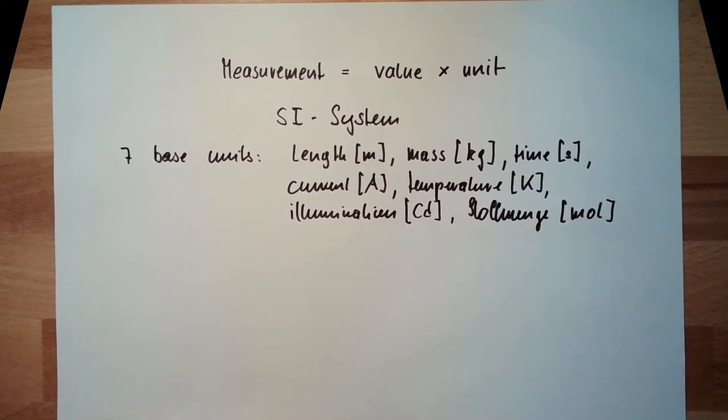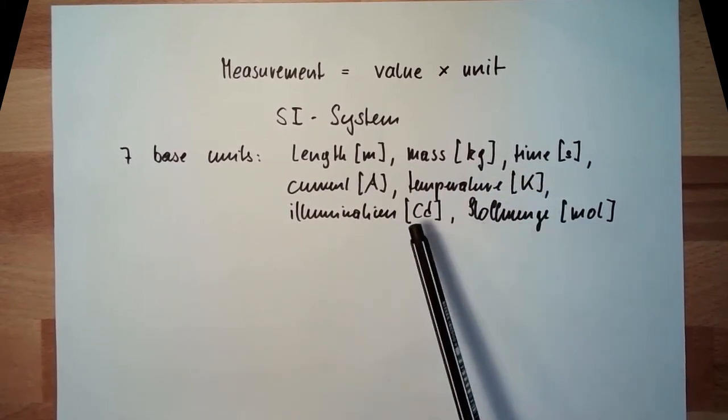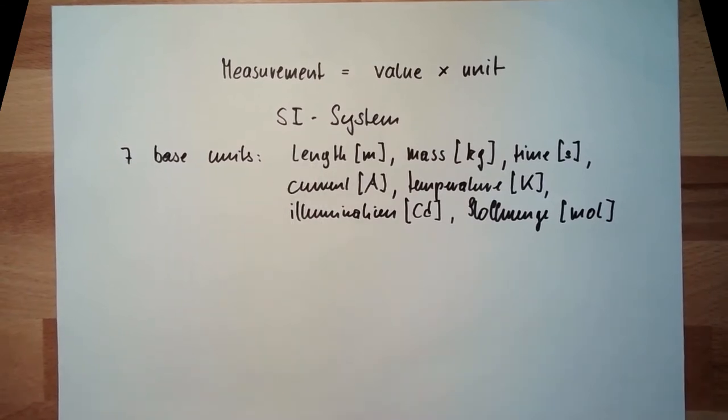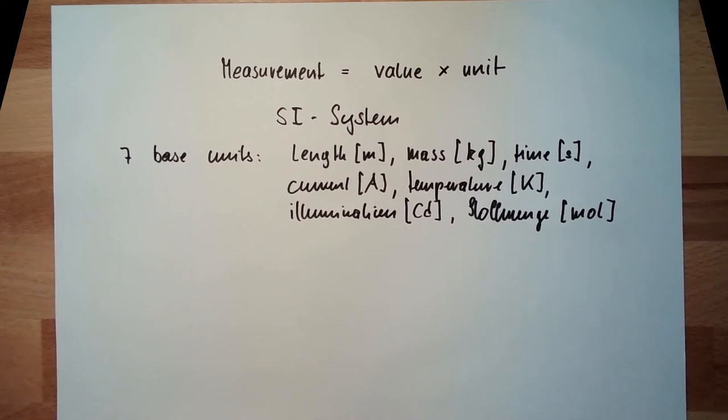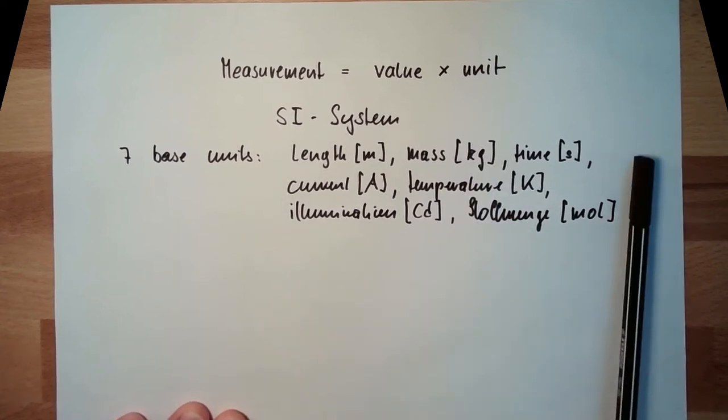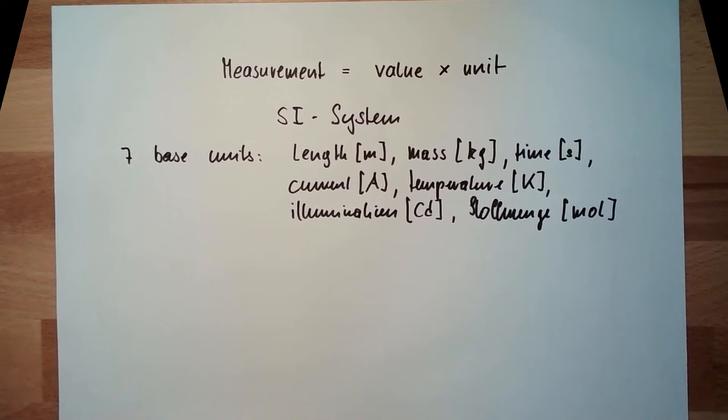Each of these units are defined somehow within the SI system. And then of course, there are other units. Everybody knows there are other units. There are, for instance, the unit of force, which is Newton. However, all of these other units can be also written in these seven base units. That's it. All other units are derived.